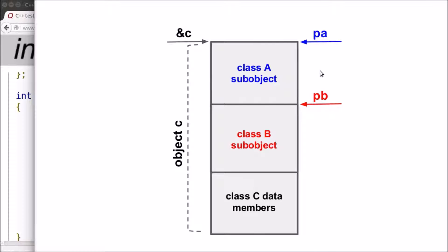Generally, C++ standard does not specify any particular order for sub-objects of an object, but for simplicity we assume here that sub-object of Class A is the first one in object C.